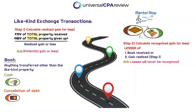Of this potential gain or loss calculated in step one, how much is getting recognized today, and how much is getting deferred for a later period? This is generally the whole point of the tax benefit from these like-kind exchange transactions. We're going to recognize either the lesser of boot received or the gain realized in step one — keyword here is 'the lesser of.' Something else to keep in mind: if a loss is calculated in step one, it is never going to get recognized today — it is always getting deferred and can be used in later periods.